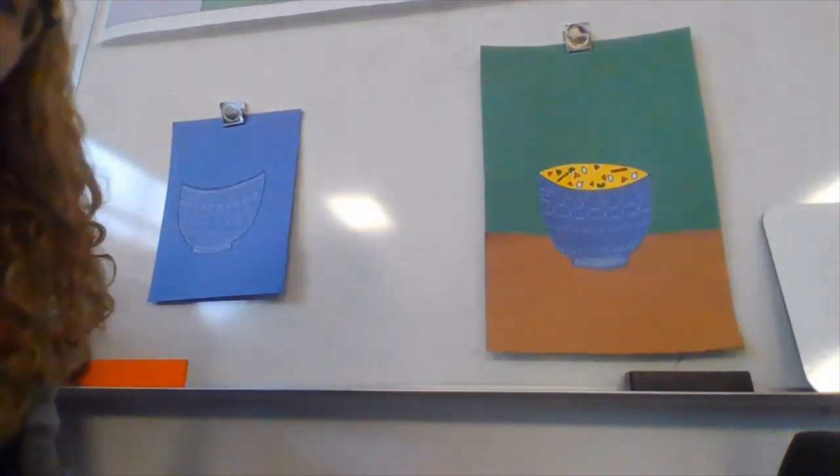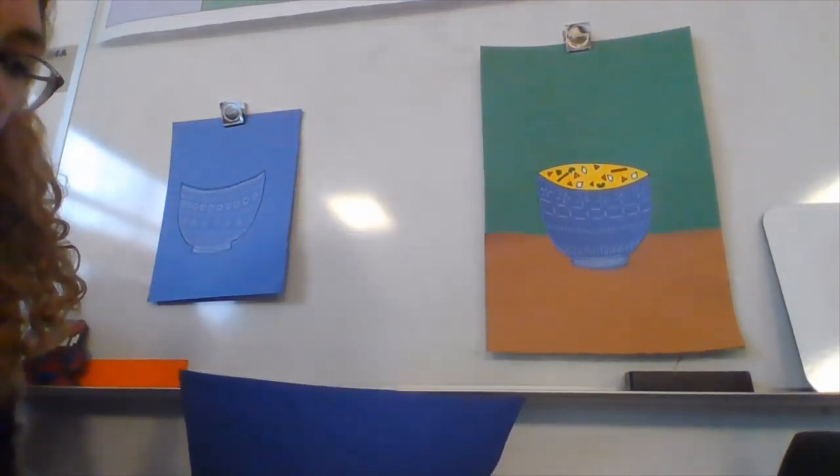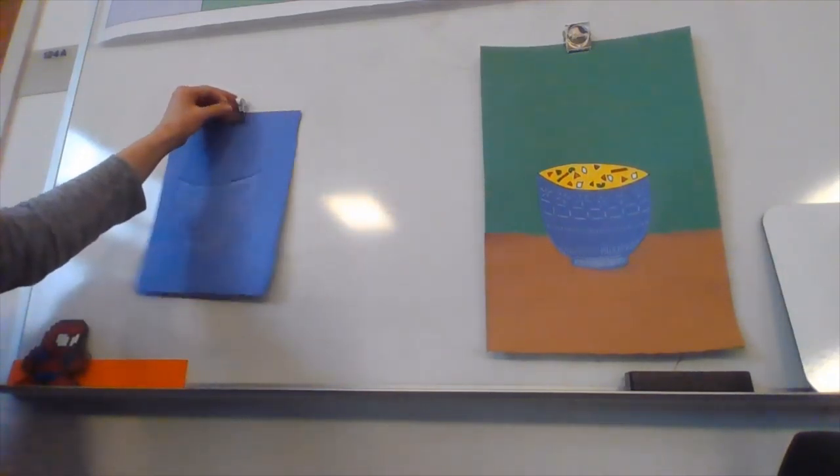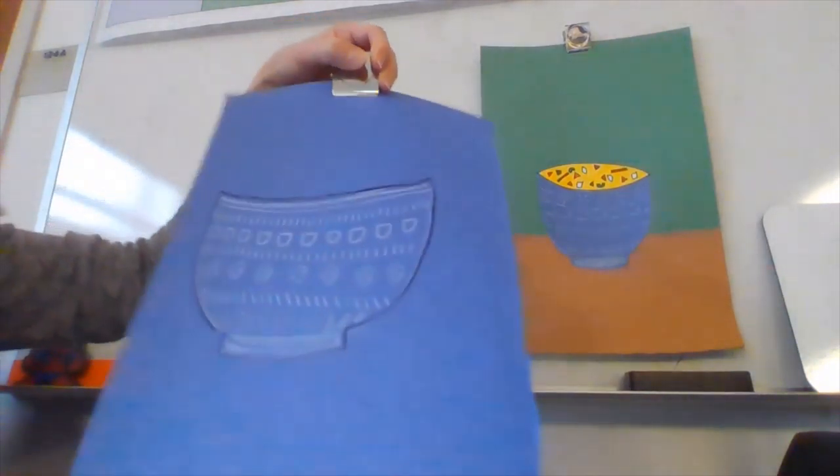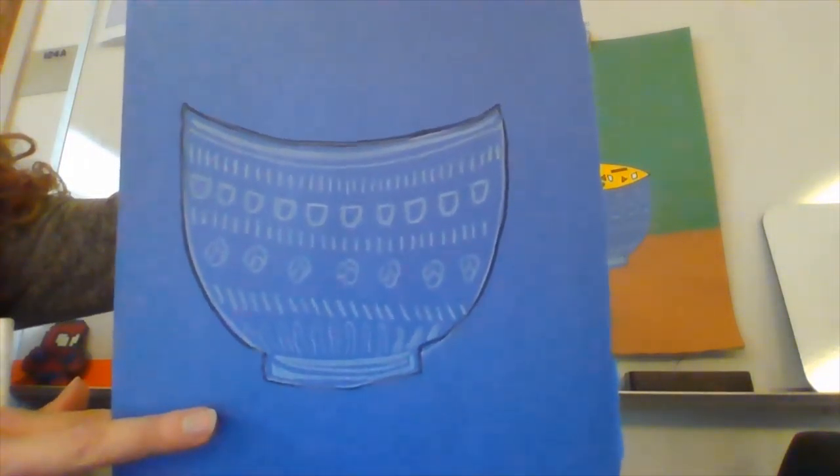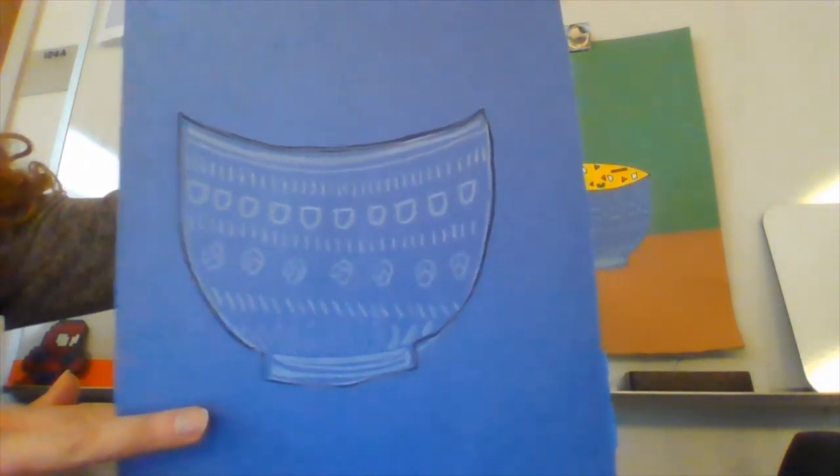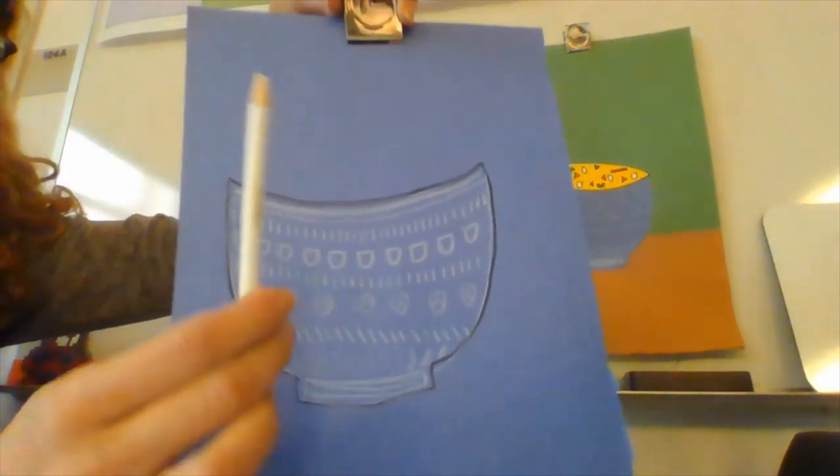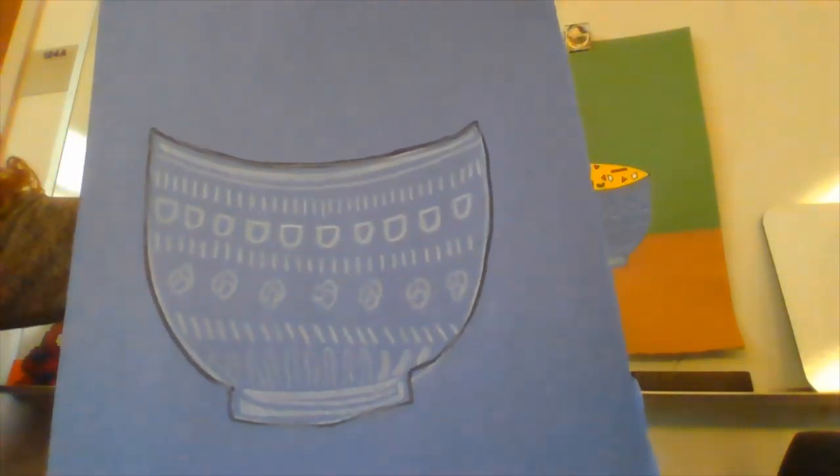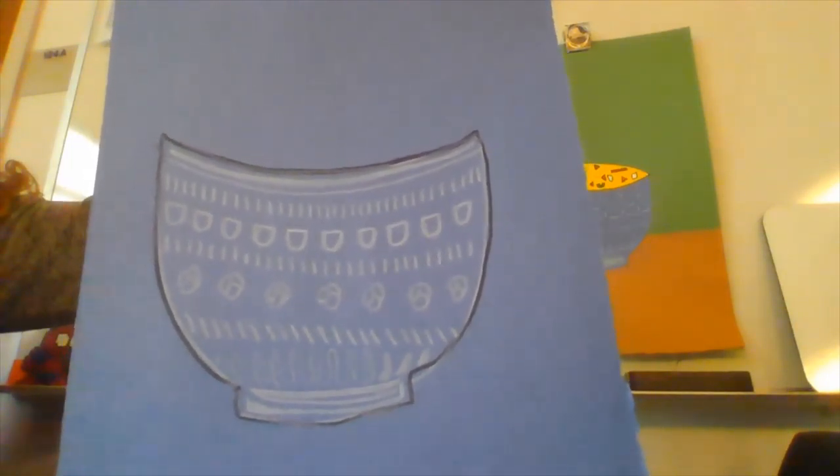So when I made my bowl, I used a tracer to make this bowl shape. Here's another example. I used a tracer and I am using white colored pencil today just to make the pattern stand out on the blue paper. You can use crayons if you want to. You can use markers or other materials that you have in the classroom.